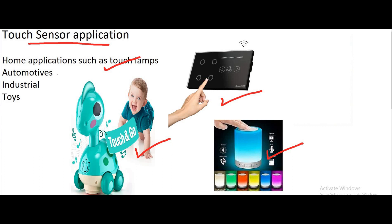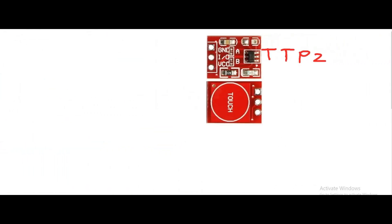Hello everyone, this is your friend Sankib and today we are going to talk about touch sensors. There are different types of touch sensors available and a lot of applications based on them. One application you can see is the touch switch - nowadays the traditional switch on electric boards has been replaced by the touch switch. You can also observe small children's toys where touching starts music or turns on a light, or you have a touch table lamp. Today we are going to see the practical application of a touch switch.